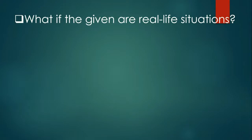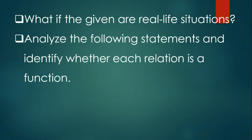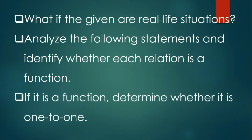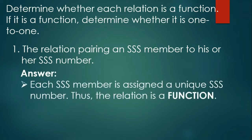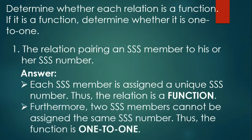What if the given are real-life situations? Let's analyze statements and identify whether each relation is a function, and if so, whether it is one-to-one. First: each SSS member is assigned a unique SSS number — no person can have two SSS numbers, and no two members share the same SSS number. So this relation is a function and it is one-to-one.